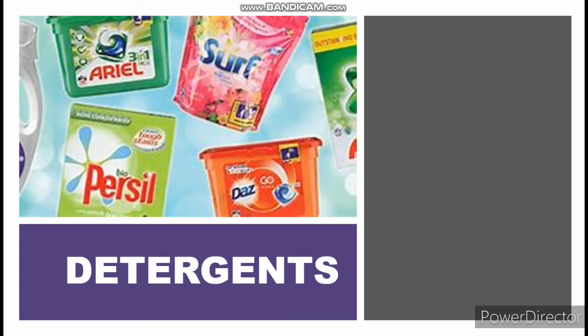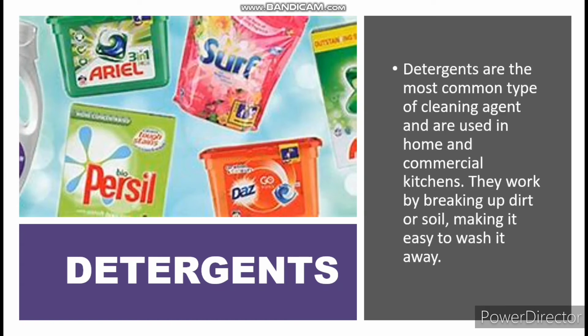The second class of cleaning agents is detergents. Detergents are used to aid the removal of grease and dirt. They are used in commercial kitchens — usually synthetic detergents made from petroleum products — and may be in the form of powder, liquid, gel, or crystals. Examples include soap and synthetic detergents such as Haki soap, Omo, Elephant, and liquid detergents.